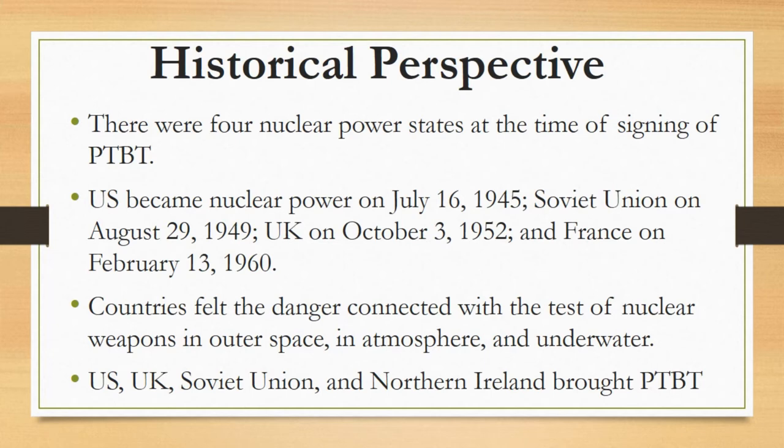Historical perspective of PTBT: there were four nuclear power states at the time of signing. They include the US, UK, Soviet Union, and France. The US became a nuclear power on July 16, 1945; the Soviet Union on August 29, 1949; the UK on October 3, 1952; and France on February 13, 1960.